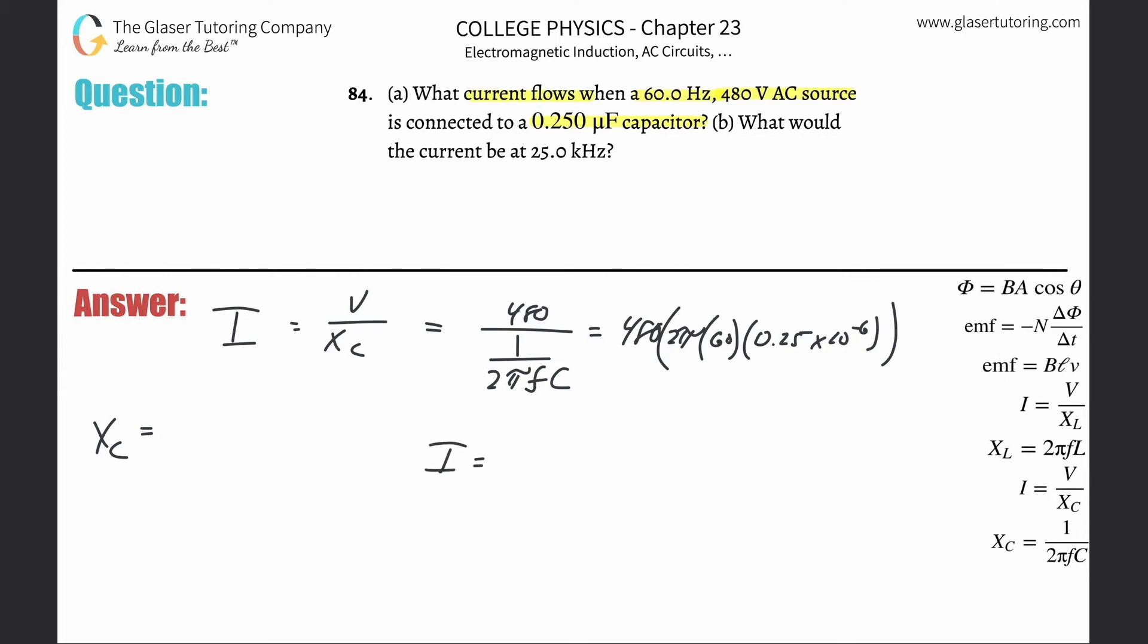And here we now have a current here being equal to 4.52 times 10 to the minus 2. That's in terms of amps. And that is indeed the current.